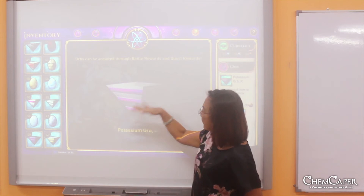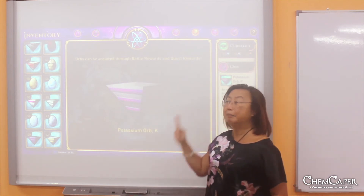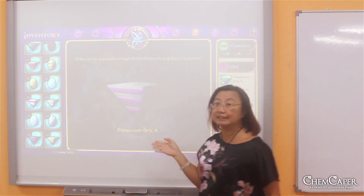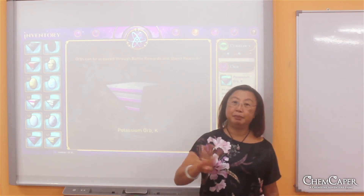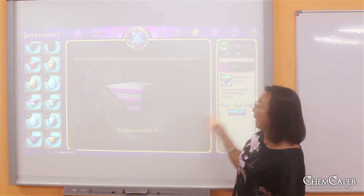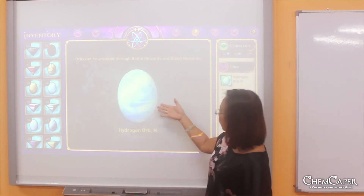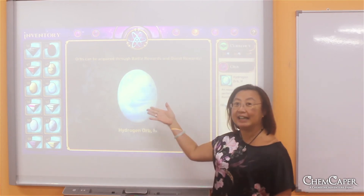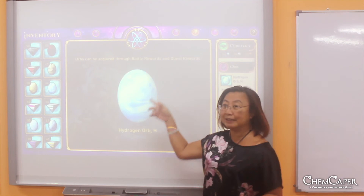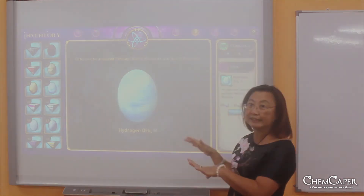There are three bands indicating three filled electron shells, plus one more outer shell that is not filled, placing it in the fourth period of the periodic table. However, there are orbs like hydrogen that have no bands because it only has one electron, no filled shells, and therefore no bands.